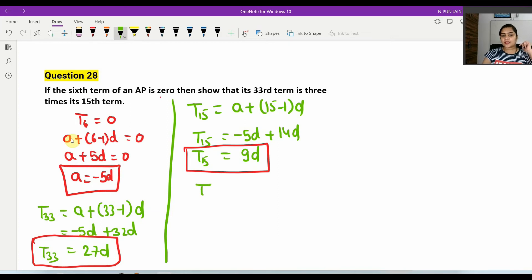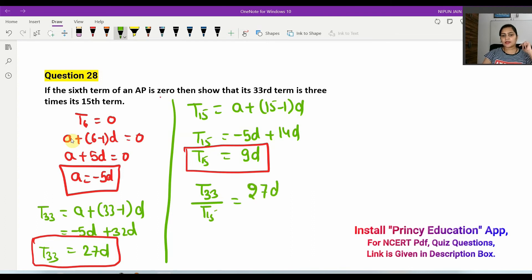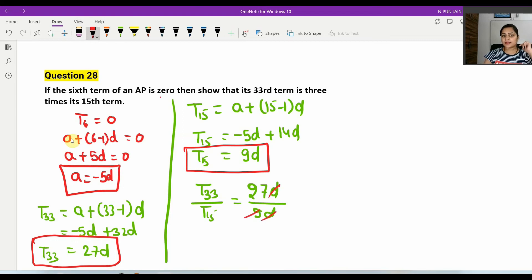So what do we do? T33 divided by T15. So our value is 27D divided by 9D. T33 is 27D and T15 is 9D. Here D to D cancel, 27 divided by 9 is 3. So T33 divided by T15 is equal to 3.